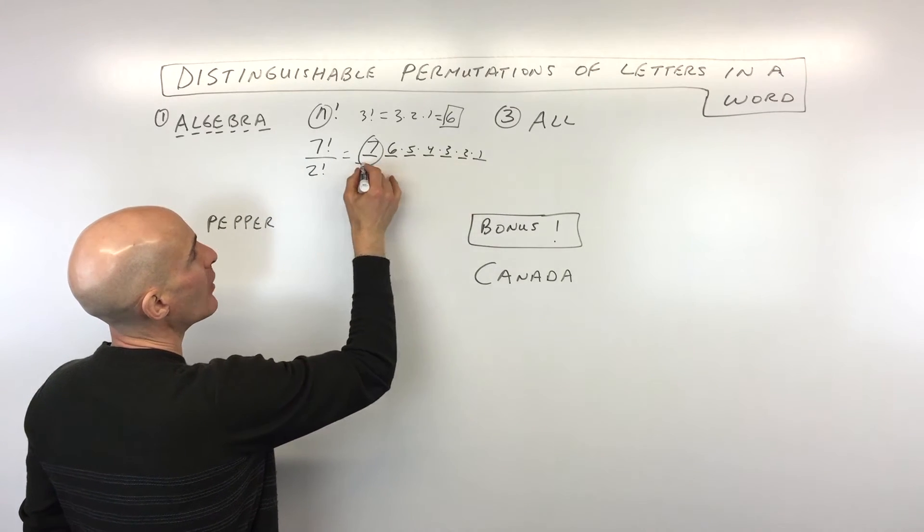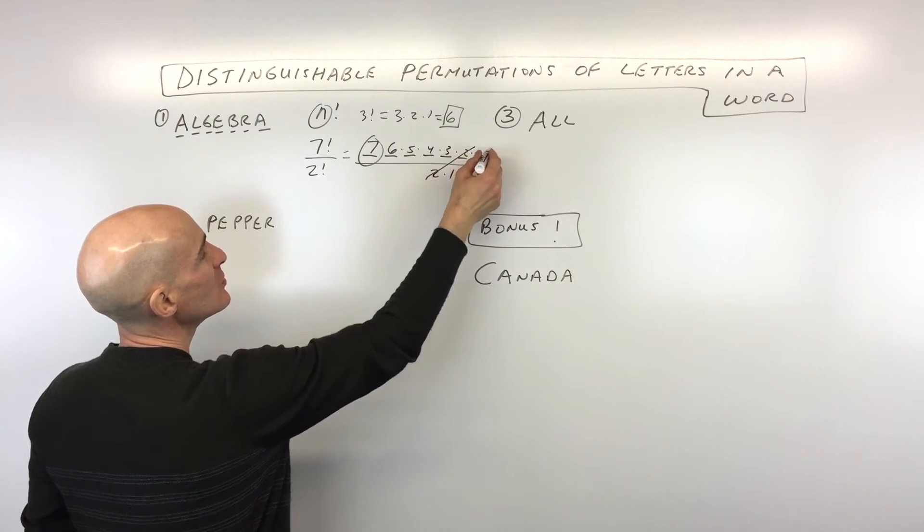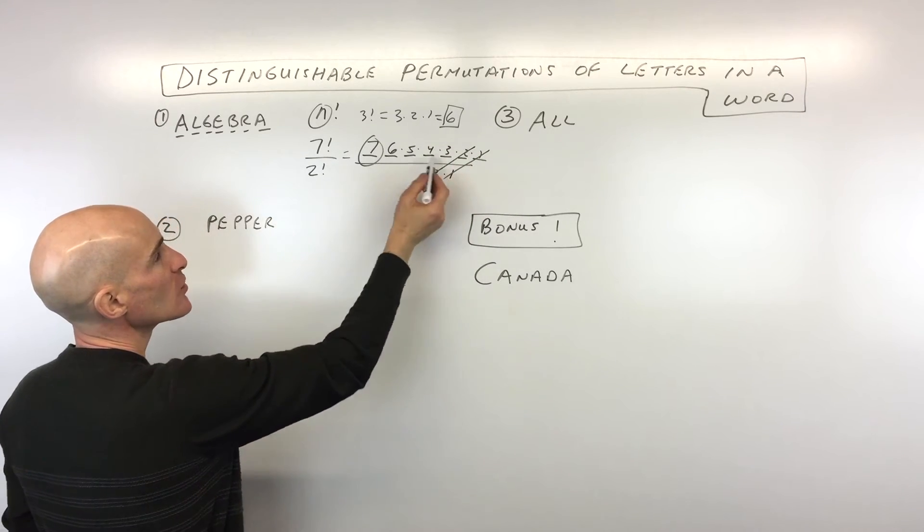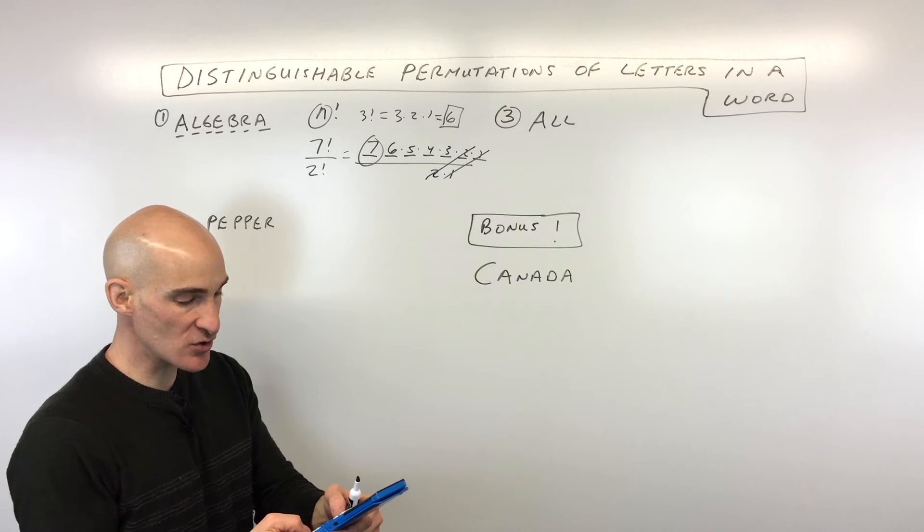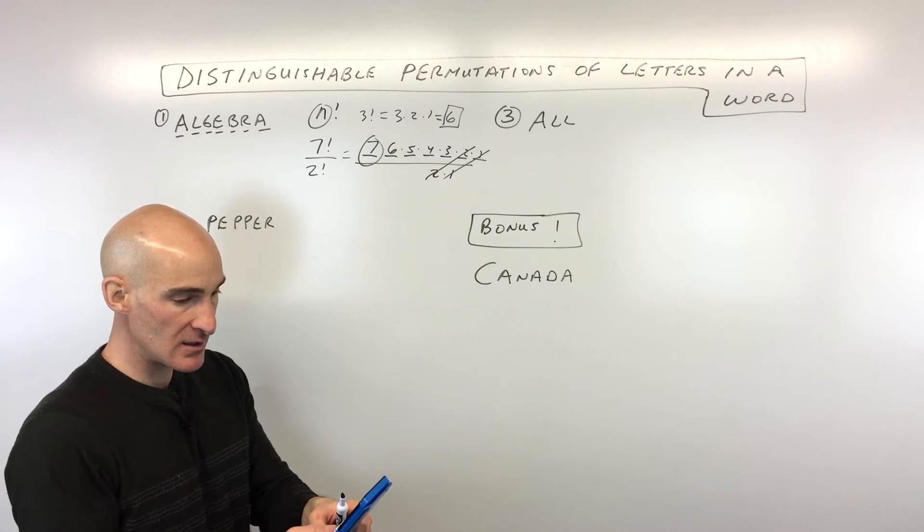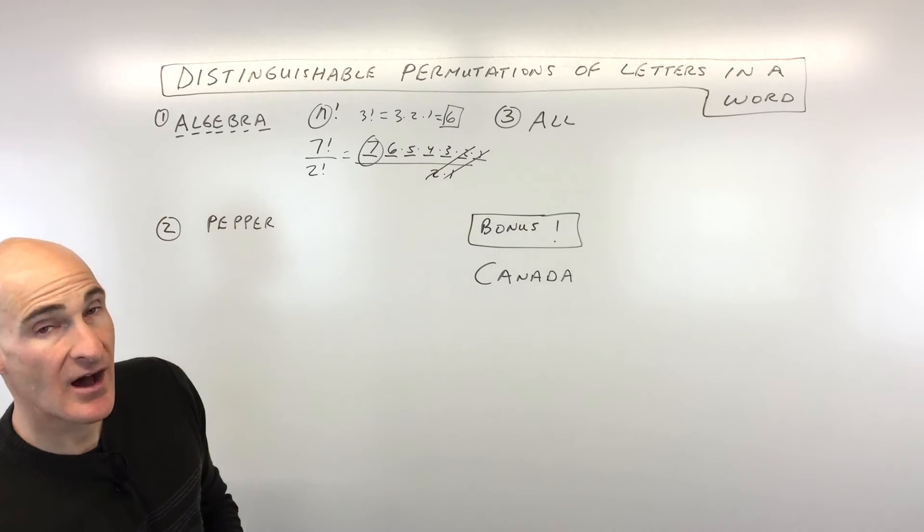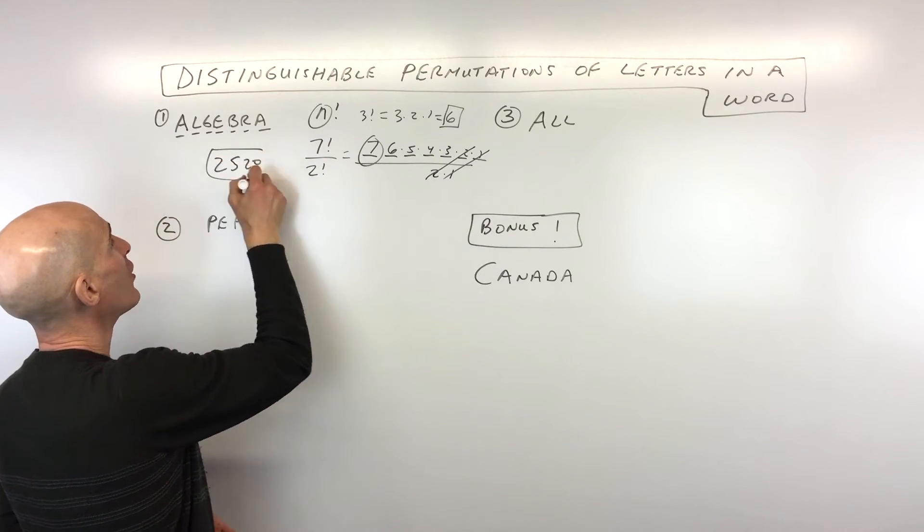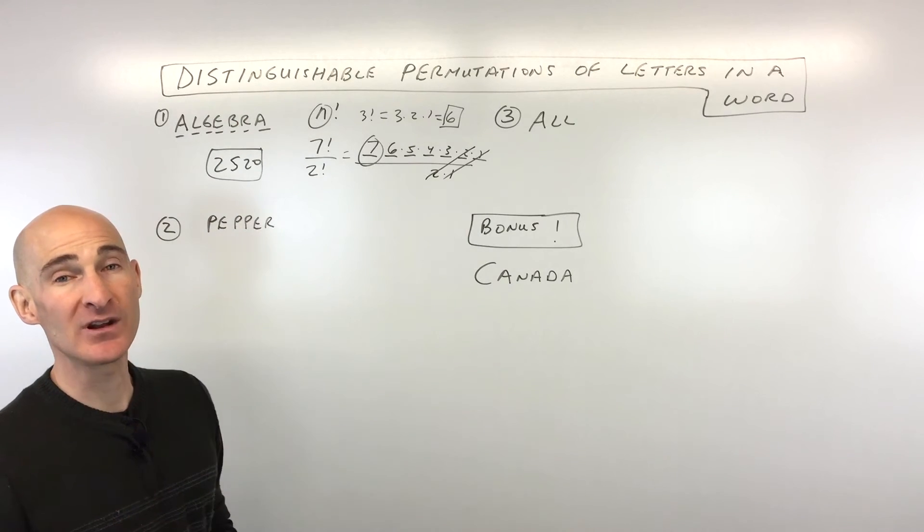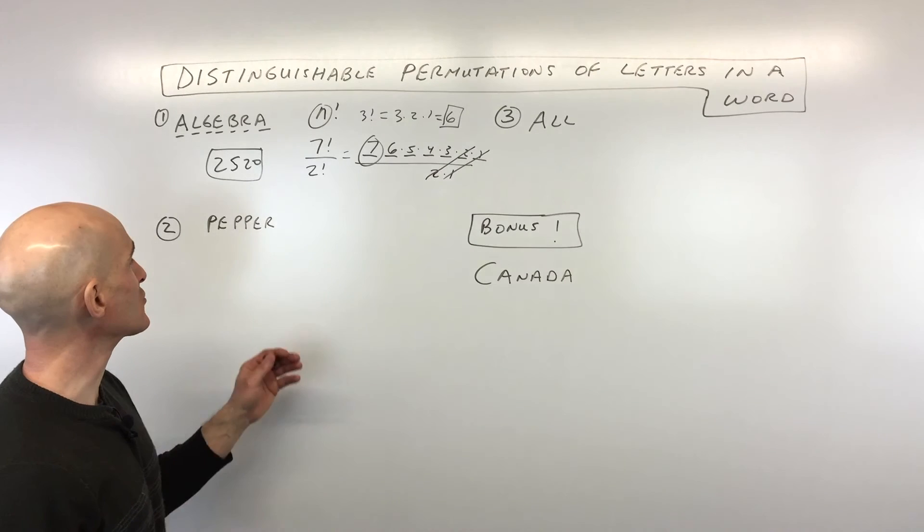So here we're just going to go ahead and simplify. So seven factorial, we've already written that out, divided by two factorial, which is two times one. And you can see the two and the one, those are going to cancel. So we really just have to multiply seven times six times five times four times three. So let's go ahead and do that. Times five times four times three, which is 2,520 different ways of using all the letters in algebra to make a different distinguishable permutation, which is like an ordering of those letters.